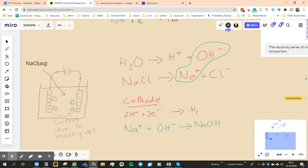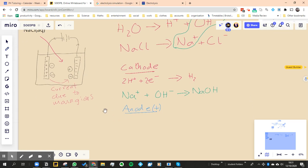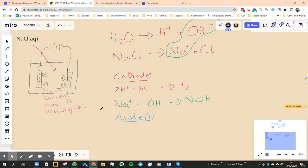So then let's now do the anode. So what's happening at the anode, which is the positively charged one. And because it's positively charged, it's going to attract the negative ion.